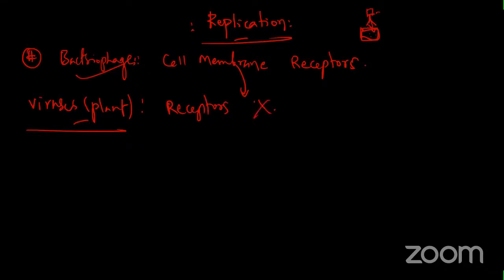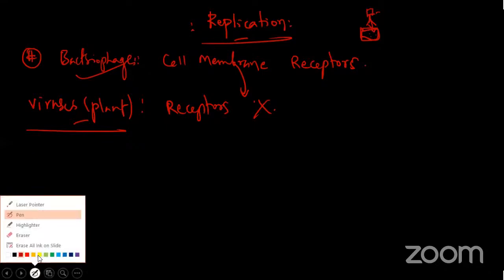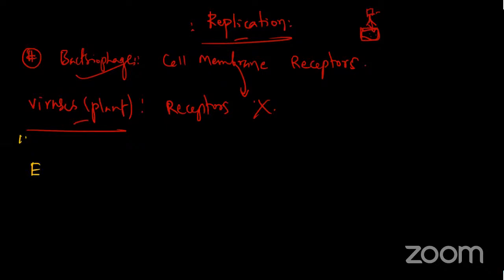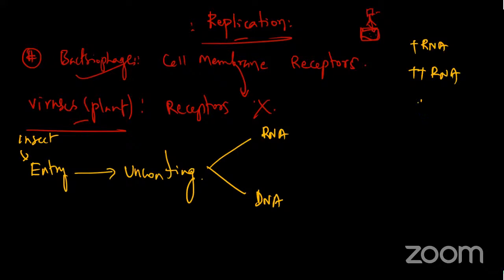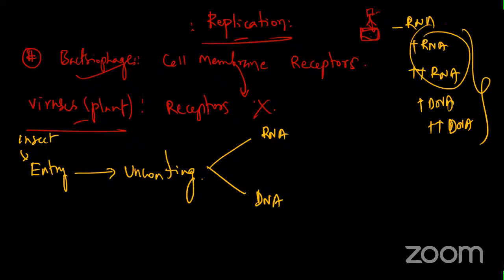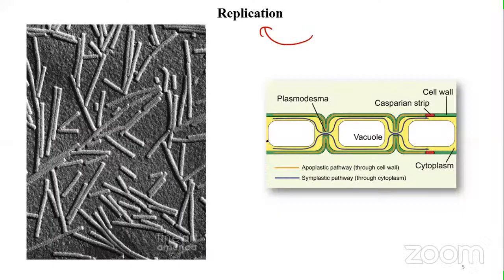The insect passively facilitates virus entry into the host. Then uncoating occurs. Viruses may be single-stranded RNA, double-stranded RNA, single-stranded DNA, or double-stranded DNA. Even within RNA viruses, there are negative-stranded RNA viruses. For each kind of virus, the process of replication differs.